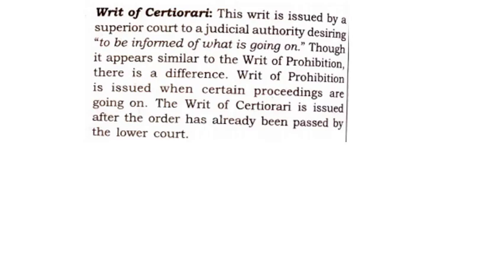Next is the writ of certiorari. This writ is issued by the Supreme Court or Superior Court to a judicial authority, desiring to be informed of what is going on. Though it appears similar to the writ of prohibition, there is a difference. The writ of prohibition is issued when certain proceedings are going on, while the writ of certiorari is issued after the order has already been passed by the lower court — to understand what order they passed and why.